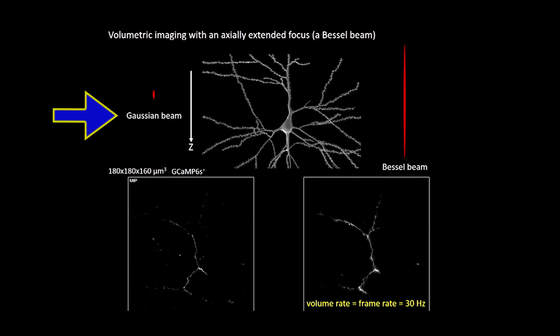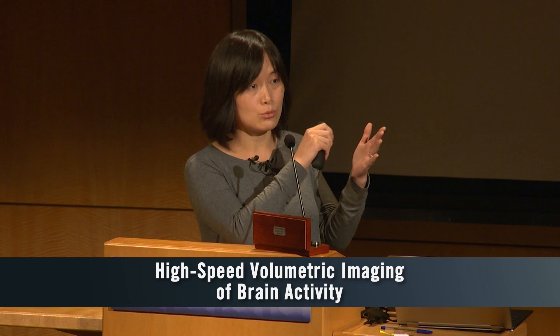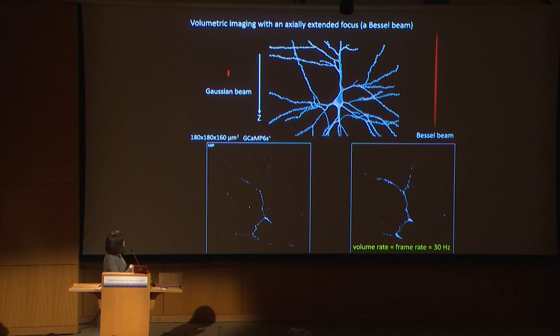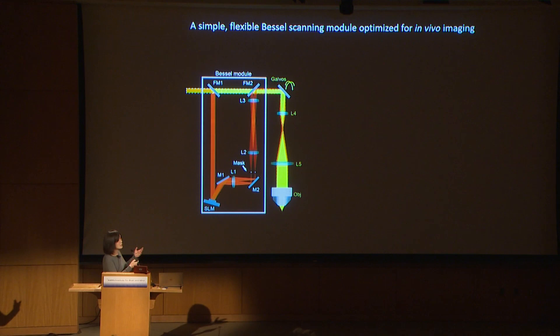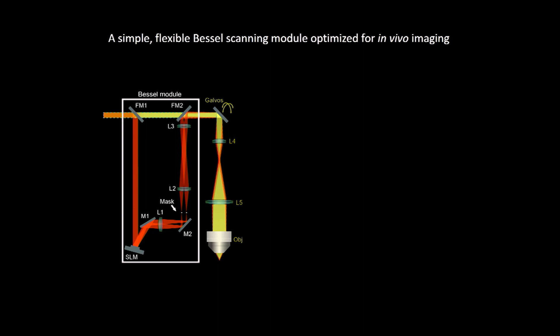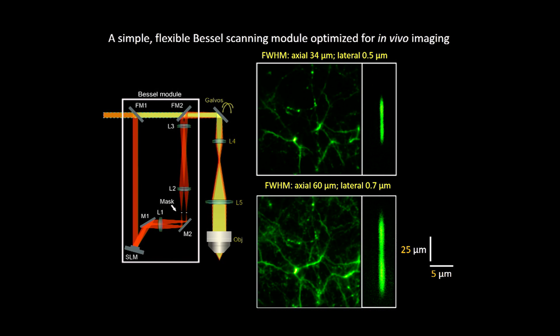This type of focus, stretched in the axial direction, is called a Bessel focus or Bessel beam. The conventional focus, which is very small in the axial direction, is called a Gaussian beam. Bessel beams are actually not exotic — whenever you go to a supermarket checkout line, the red light reading the barcode is a Bessel beam.